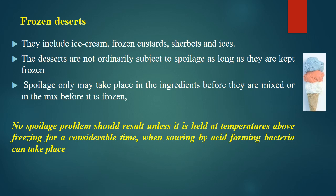Now we will discuss frozen desserts, especially ice cream. These include ice cream plus other frozen custards, sorbets, and ices. The desserts are not ordinarily subject to spoilage as long as they are kept frozen, mostly at minus 20 degrees Celsius, and can stay 3 to 6 months without any problem. Spoilage may only take place in the ingredients before they are mixed, or in the mix before it is frozen. No spoilage should result unless held at temperatures above the freezing point for a considerable time, when souring by acid-forming bacteria can take place.